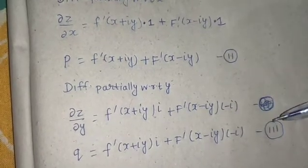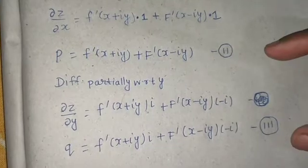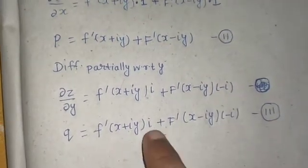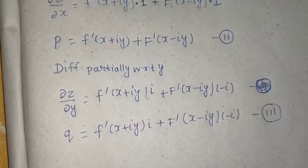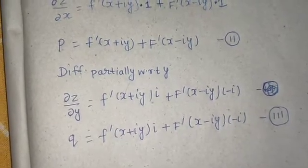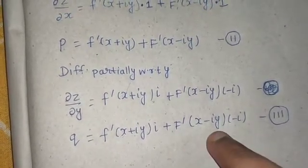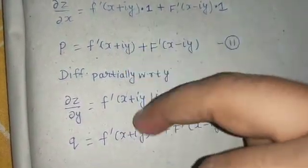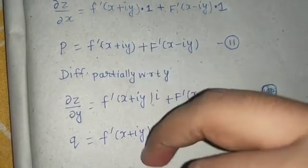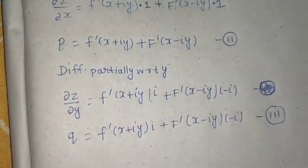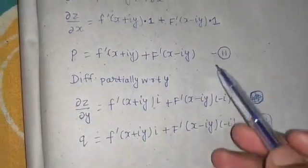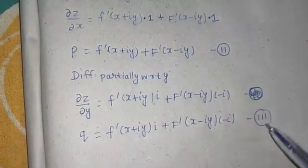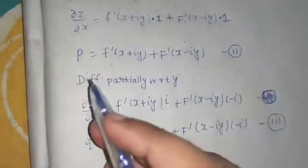You might be thinking: why can't we eliminate the arbitrary functions using equations two and three? If you move the i to one side, the f'(x − iy) terms would cancel, but the f'(x + iy) terms would be added — so elimination is not possible. Therefore, we need to differentiate equations two and three once more.